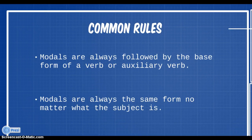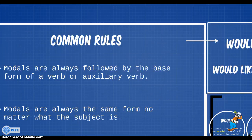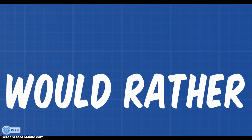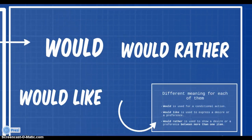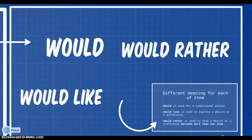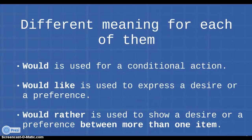But for today's capsule, we are just going to talk about three of them: would, would like, and would rather. Be careful, there's a different meaning for each of them. Would is used for conditional action. Would like is to express a desire or a preference. And finally, would rather is also used to show a desire or preference, but between more than one item.